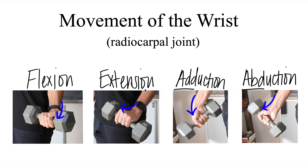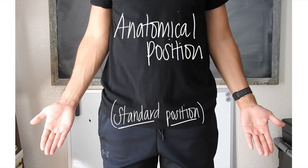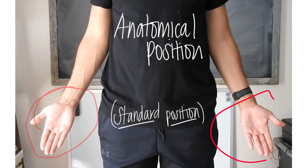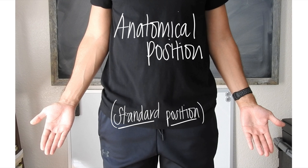Before we dive into the movement of the wrist, we need to understand that anytime we refer to anatomical terms such as flexion, extension, adduction, and abduction of the wrist, we are referring to the body in the anatomical position. This is a standard reference point systematically agreed upon for clear understanding. In this position, we are standing upright, facing forward, arms at the side, and palms facing forward.